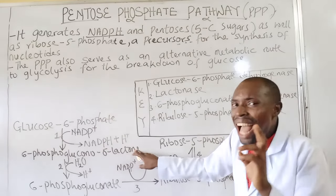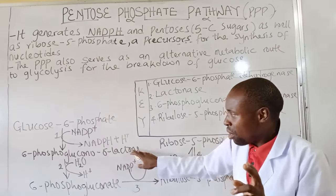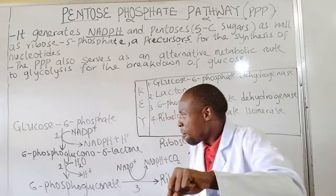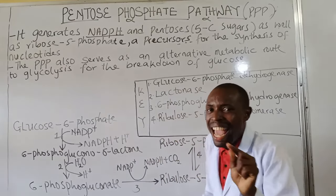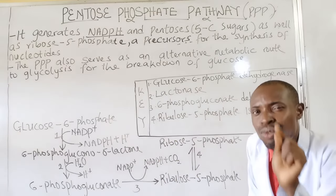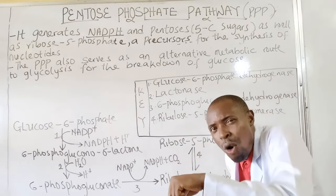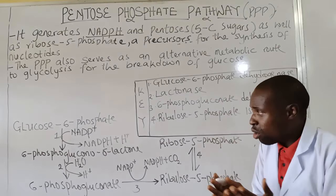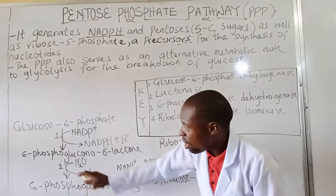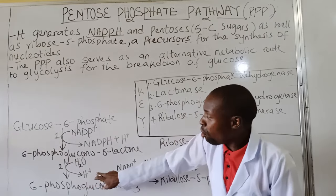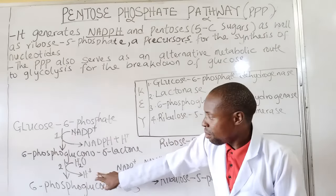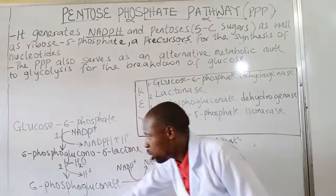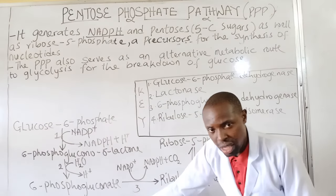When that happens, this substrate is then hydrolyzed by the enzyme called 6-phosphogluconolactonase, in short lactonase, in which there will be release of a proton, and thereafter the product formed is called 6-phosphogluconate.